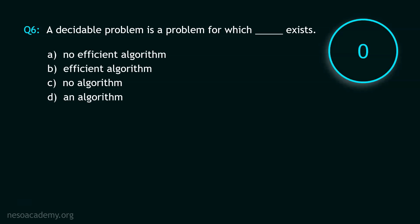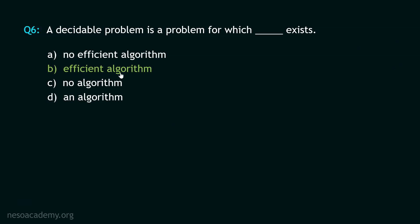And your time starts now. Stop! The correct option is option B. Efficient algorithm. A decidable problem is a problem for which an efficient algorithm exists. Now here comes question number 7.